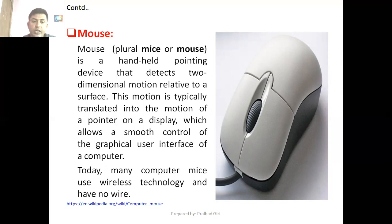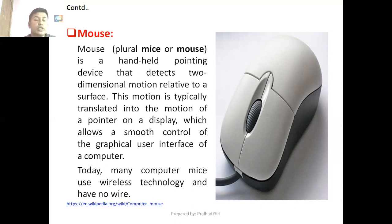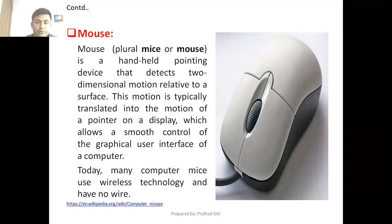Initially there were two-button mice with one right button and one left button. Then we have three-button mouse with right, left, and scroll button. Finally we have optical mouse with two buttons and a scroll button in the middle. To scroll up or down on the page, you can just use the scroll button available on the mouse.